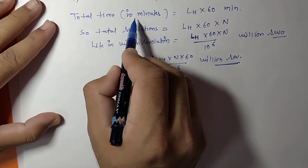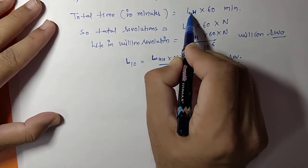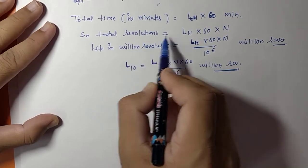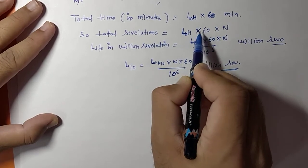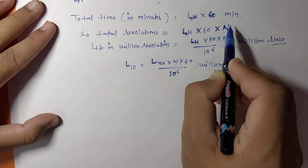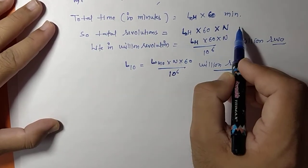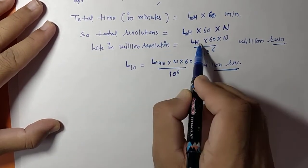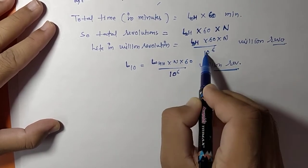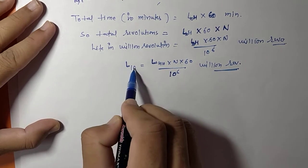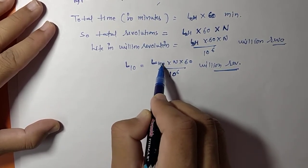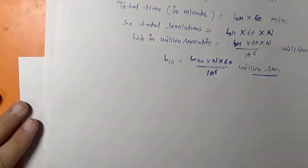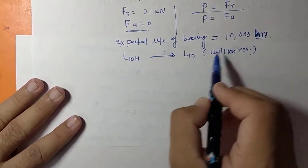To convert the life: L10 (in million revolutions) = L10H × 60 × N / 10⁶, where L10H is the life in hours and N is the speed in RPM. With L10H = 10,000 hours and N = 125 RPM, this gives L10 = 10,000 × 60 × 125 / 10⁶ = 75 million revolutions.